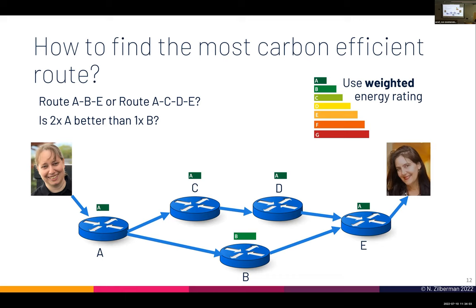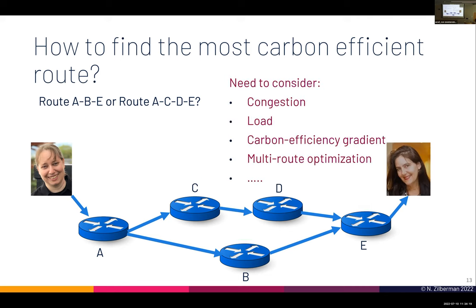I need a weighted energy rating that accounts for different route lengths and different ratings to find the best route. But it's still not easy — I need to consider that if everyone picks the most carbon efficient route, we'll have congestion and increased load, so devices may become less carbon efficient. That's what we mean by the carbon efficiency gradient. We need to handle multi-route optimizations and so on.